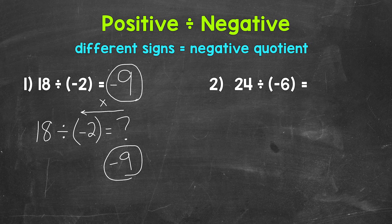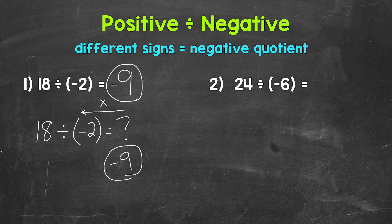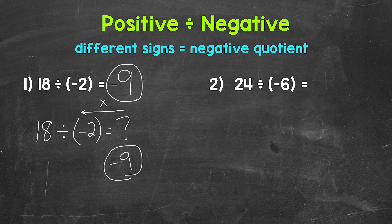Let's move on to number 2 where we have 24 divided by negative 6. We have a positive and a negative, so we know our quotient will be negative because of those different signs. Let's think of this as 24 divided by 6, which is 4.